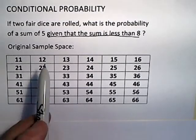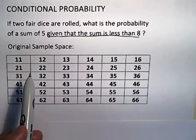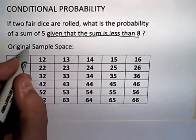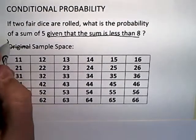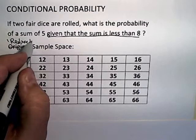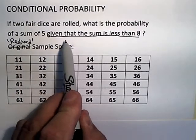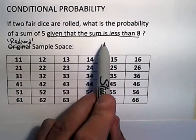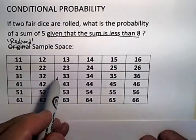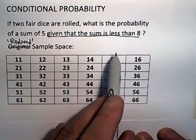So if that's the original sample space, the reduced sample space is obtained by applying the condition. The condition is the sum is less than 8, so anything whose sum is not less than 8 gets thrown away.